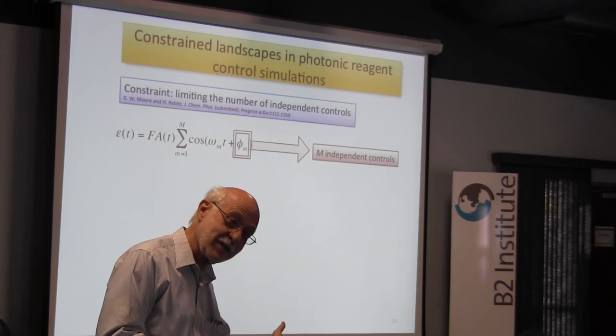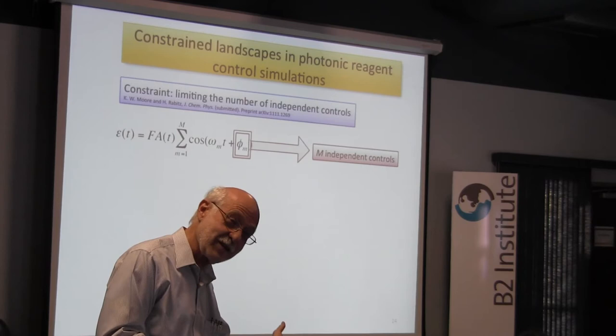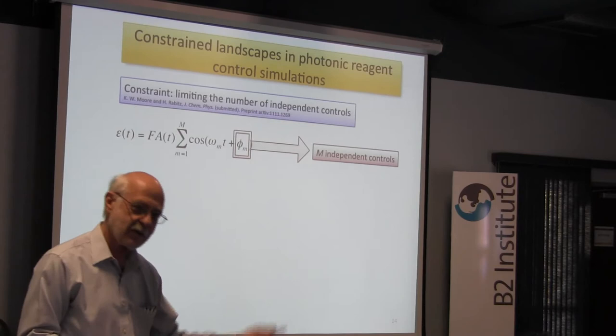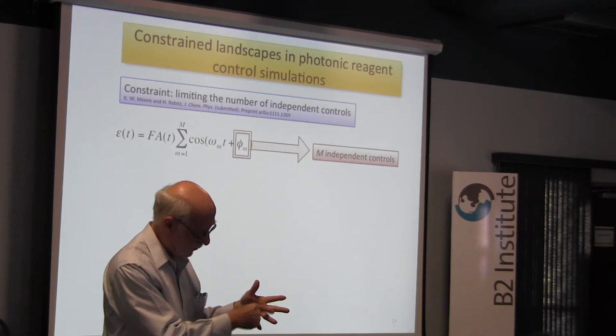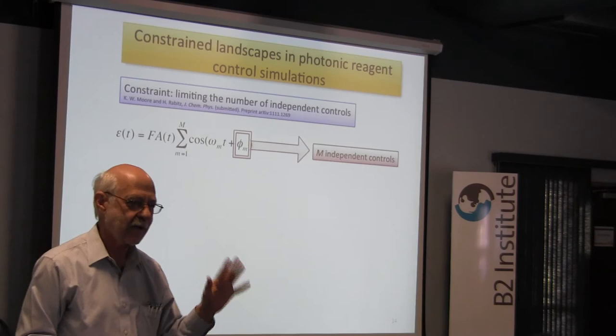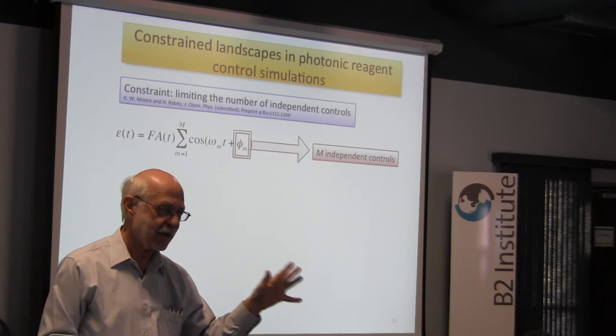Theoretically, you can show there's an existence statement — there are good basis functions — but unfortunately they are physics-dependent. So what do we get away with? With a simple system, you pick radiation that is resonant or closely resonant with transitions, and you're in the right ballgame. Take freshman spectroscopy and it's okay. If you really want high-precision results, you need to be more careful.